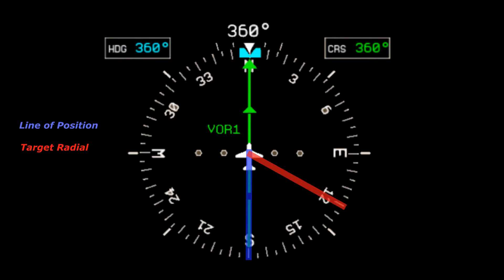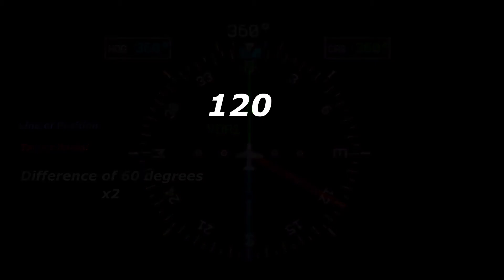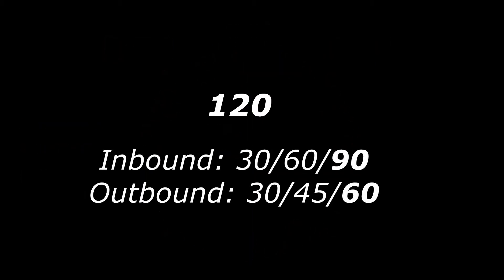Your intercept angle is the angle at which you will arrive at the target radial. There are two ways to travel along a radial — inbound or outbound. If you are targeting an inbound radial, the possible angles are 30, 60, and 90 degrees. If you're outbound, it'll be 30, 45, and 60 degrees. To do the calculation, take the difference between your line of position and the target radial, multiply that by two, and then take the next step up — that will be your intercept angle. If the number you got exceeds the maximum angle, then your intercept angle will be the maximum angle.